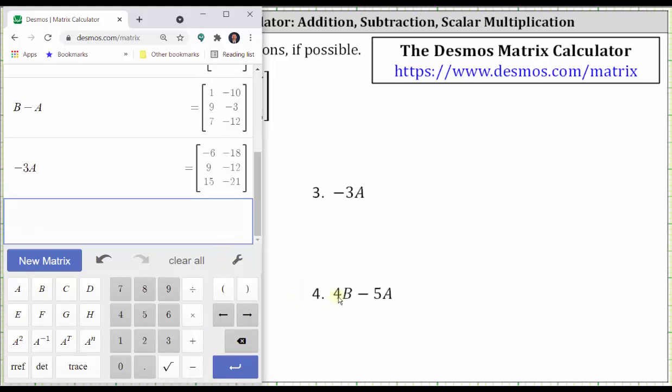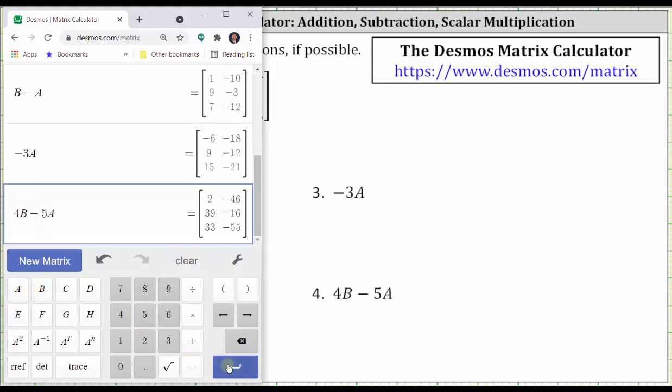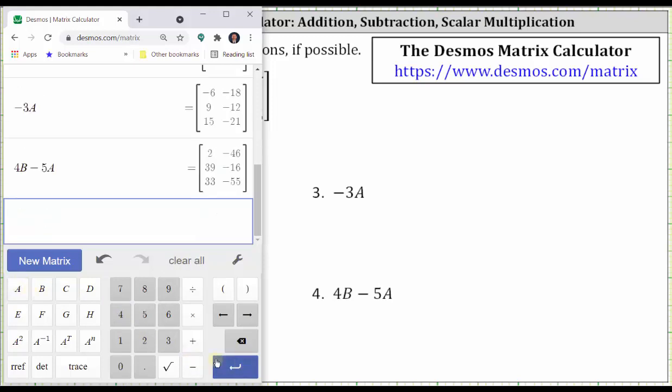And then for number four, we have four times matrix B minus five times matrix A. And we simply enter four B minus five A, and we have the result. And let's go ahead and record these two.